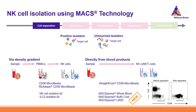In contrast, it's also possible to directly isolate NK cells from the starting material — whole blood, buffy coat, or LeukoSep/LRS chambers. For positive isolation there are straight-from CD56 microbeads, and for untouched isolation there is the new MACSxpress kit, which can be used for whole blood, buffy coat, or LRS chambers.